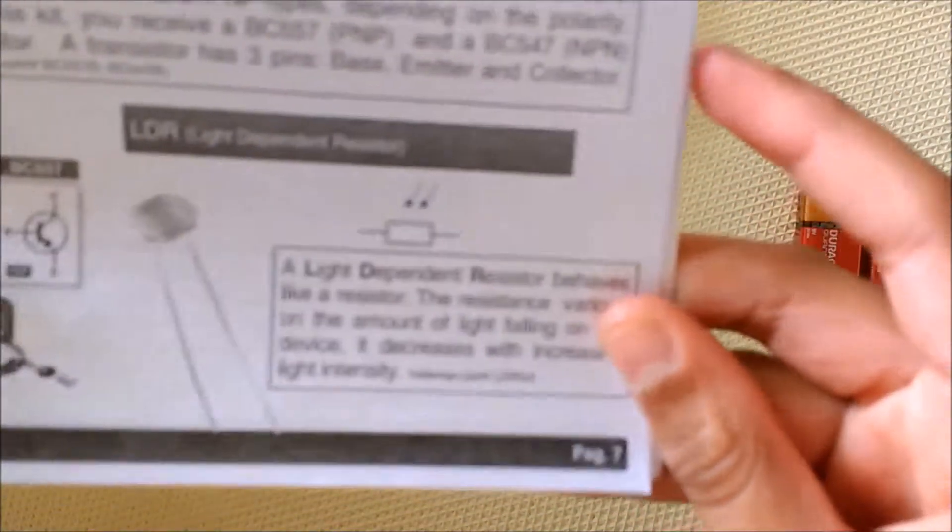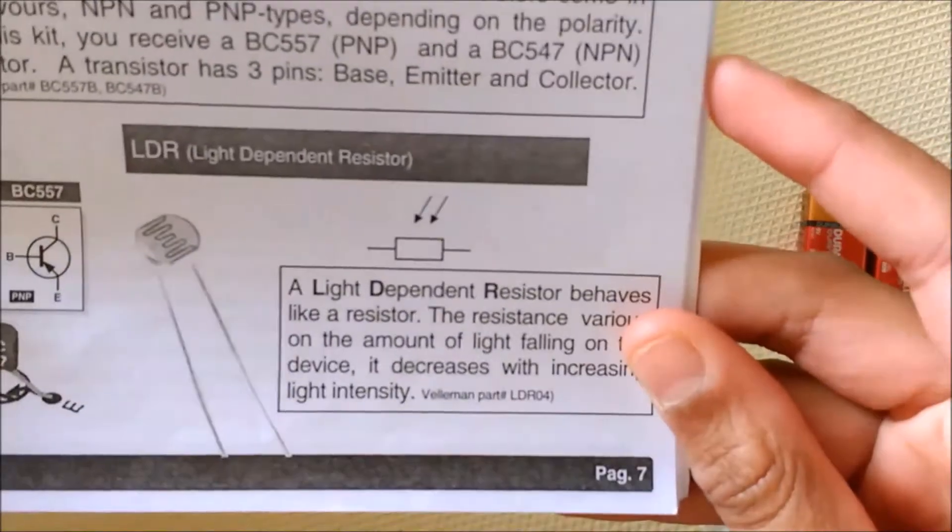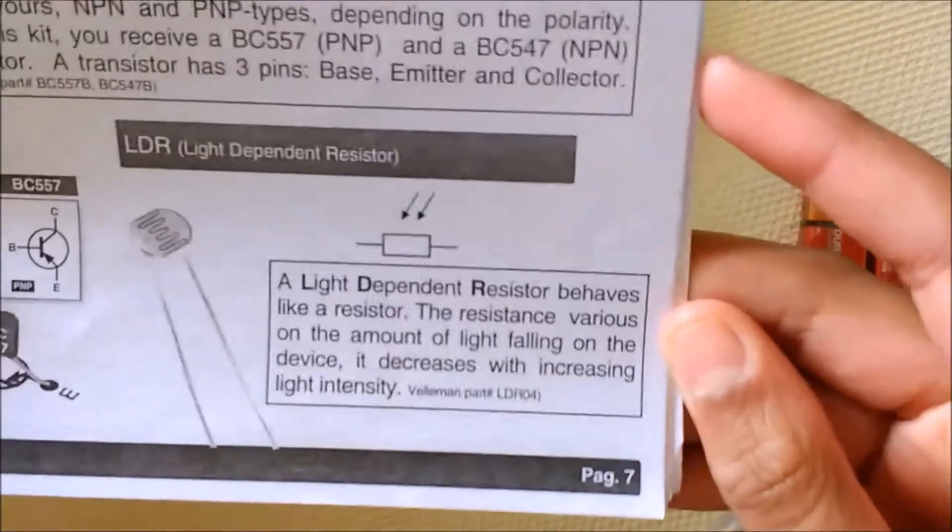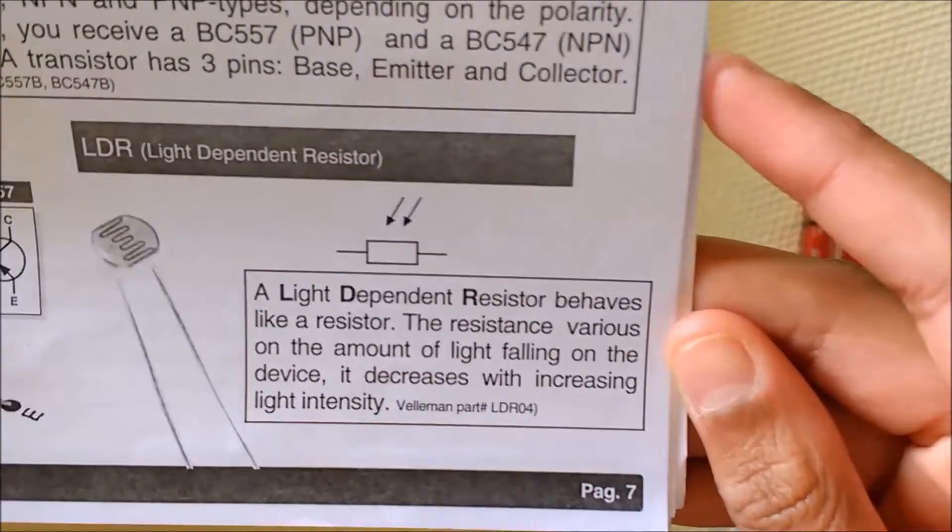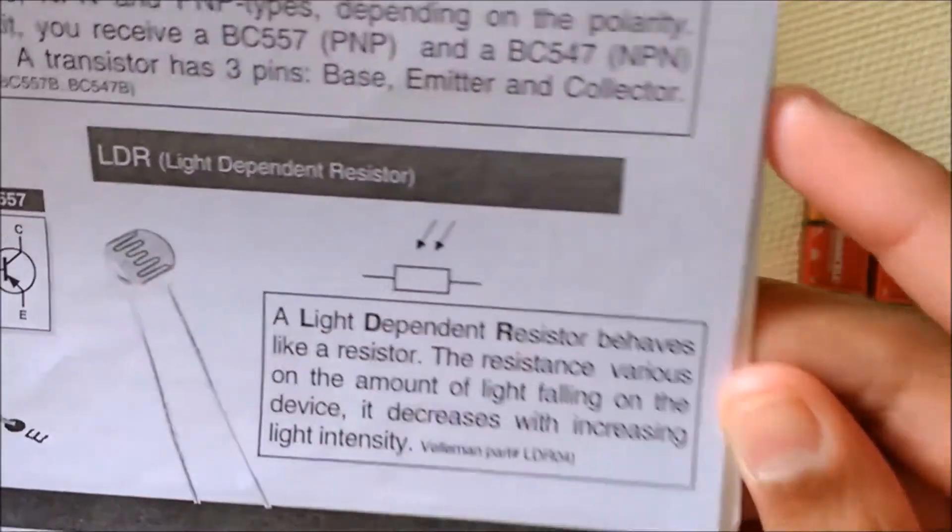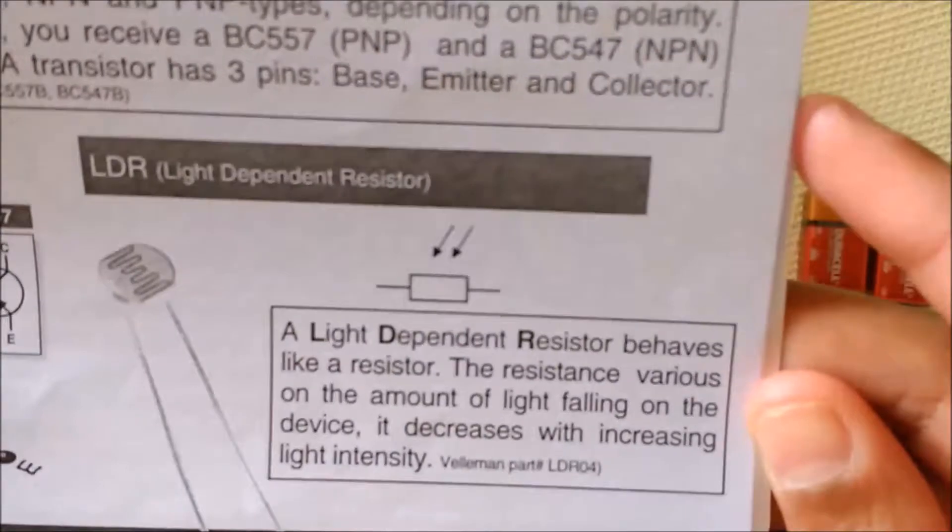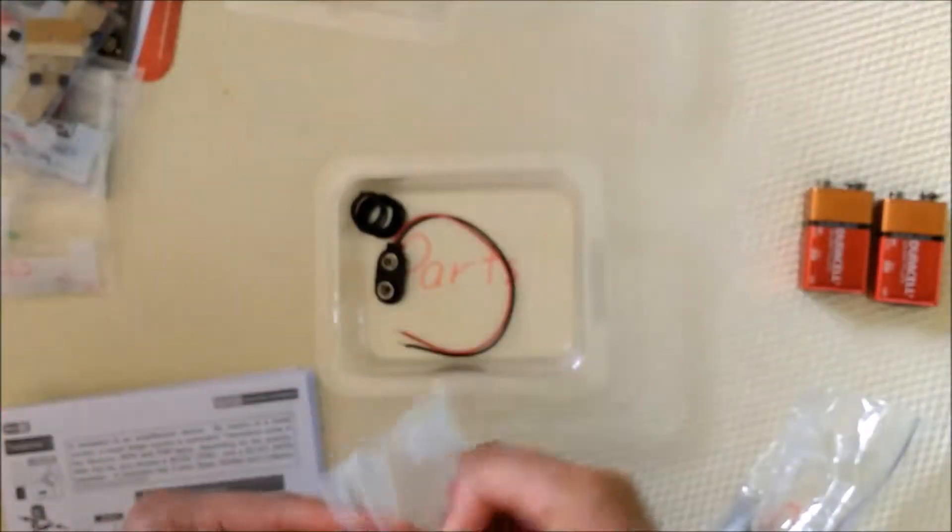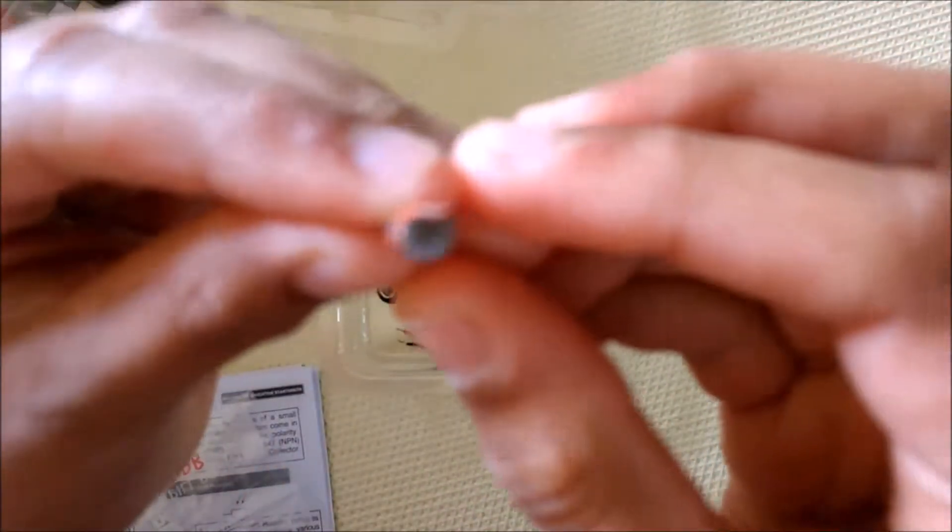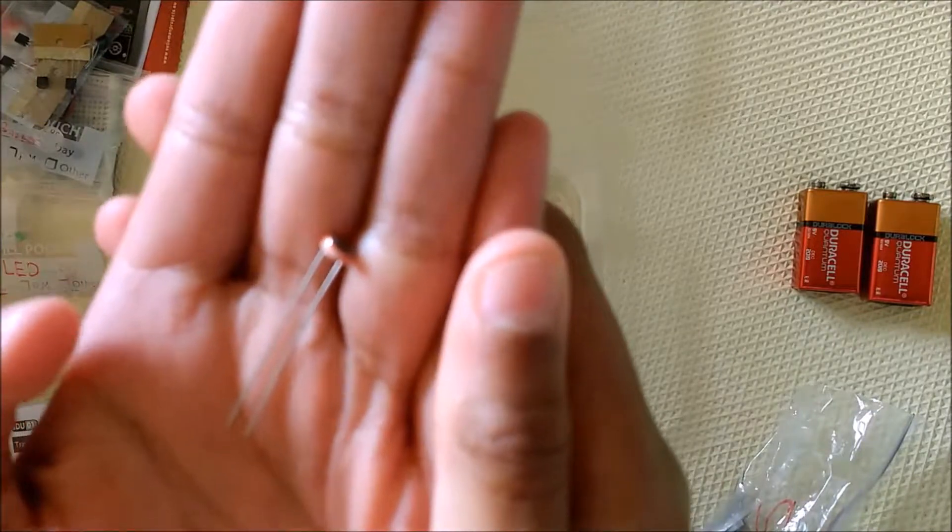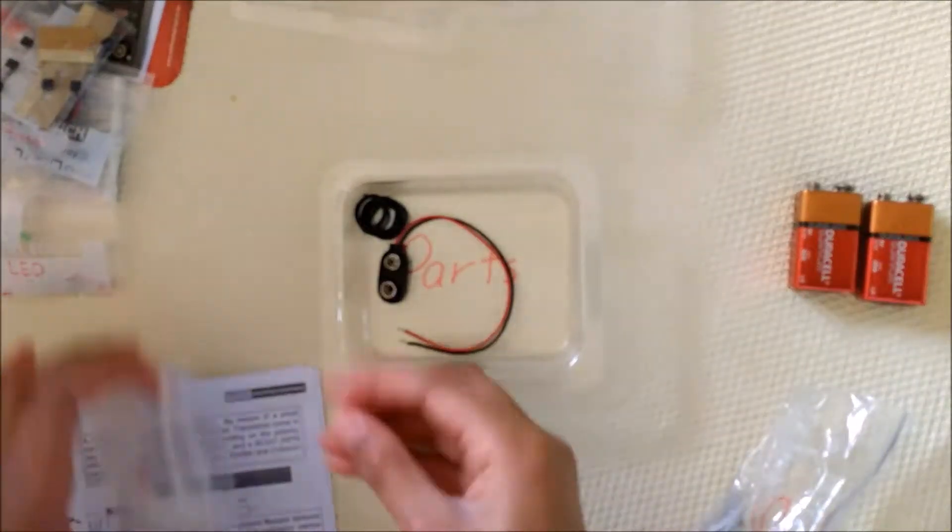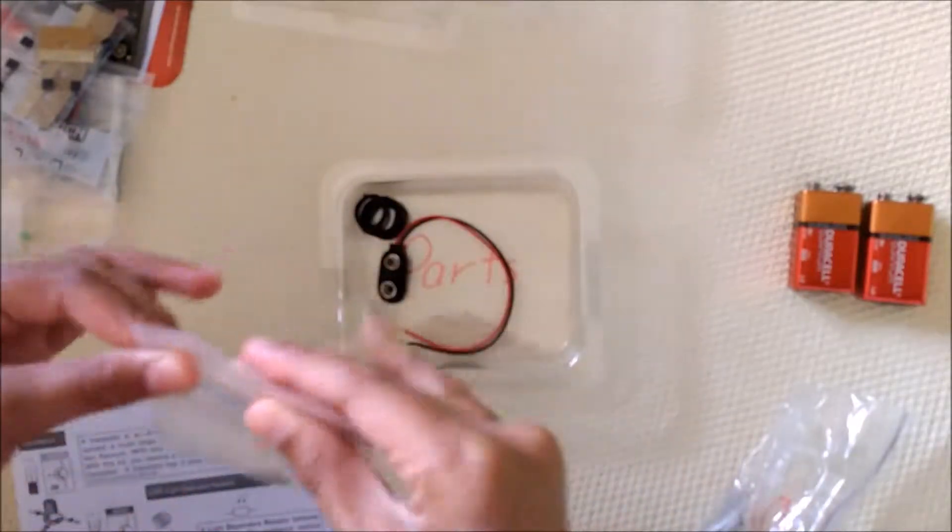Next is LDR, light dependent resistor. A light dependent resistor behaves like a resistor. The resistance varies on the amount of light falling on the device. It decreases with increasing light intensity. It's pretty small. That's why it's good to keep it in a plastic bag so you don't get confused if it's just lying around.